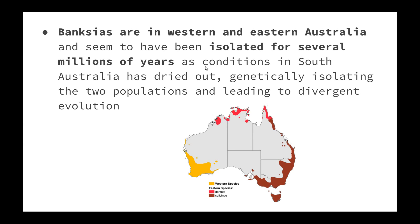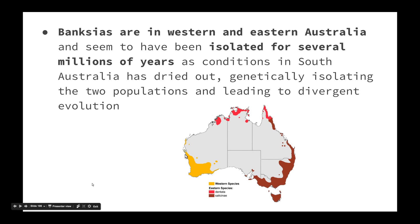Banksias are found in both Western and Eastern Australia and seem to have been isolated for several millions of years as conditions in South Australia dried out, causing genetic isolation between the two populations. This led to what we know as divergent evolution — starting with one species and, over time in different environments, ending up with two completely different species that have evolved from the original one. We can see that the Western species is now completely different from the Eastern species of Banksia.